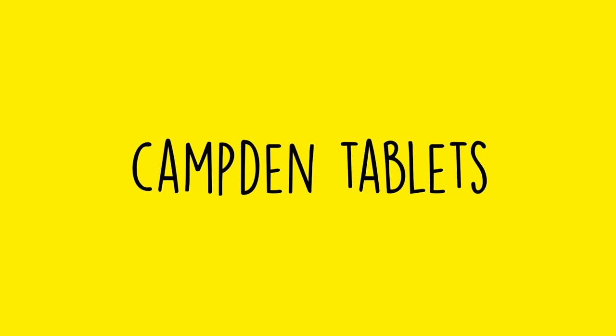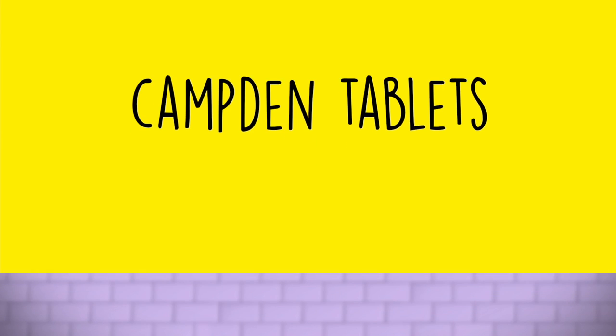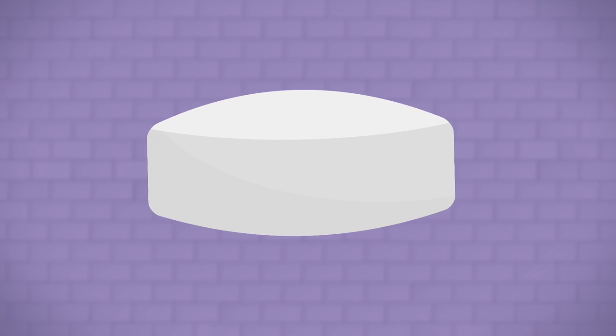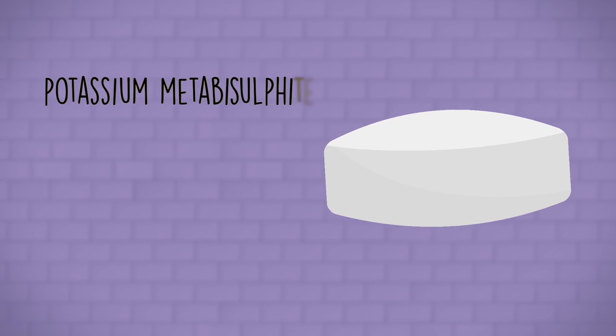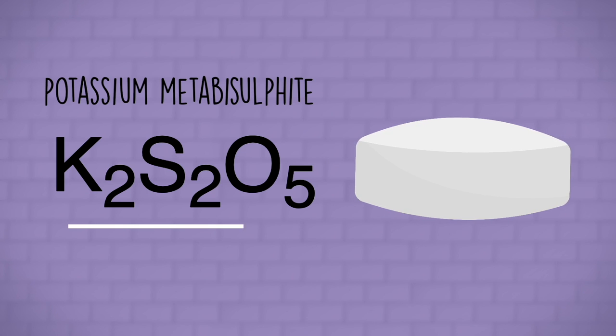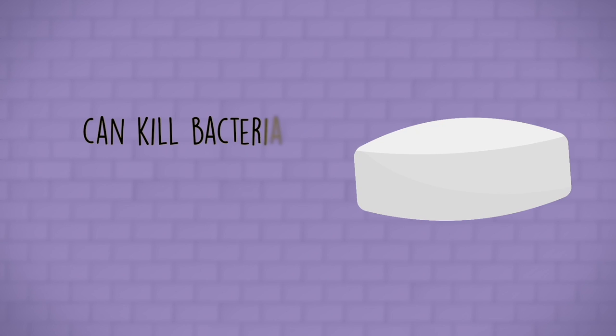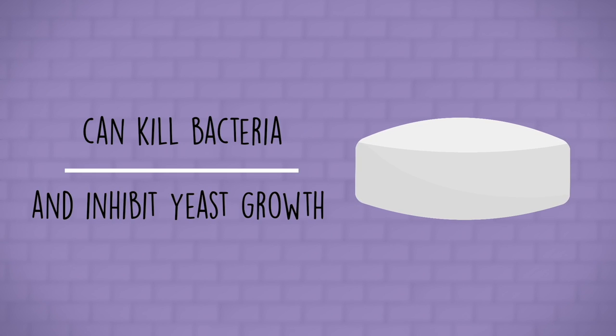Campden tablets. First off, these are certainly not an absolute necessity. But for a beginner brewer, they offer some peace of mind in a few circumstances. These pill-shaped tablets are made of potassium metabisulfite, a sulfur-based product used primarily to sterilize wine, cider, and mead. They can kill bacteria and inhibit the growth of most wild yeasts. More on that in video 3 of this series.